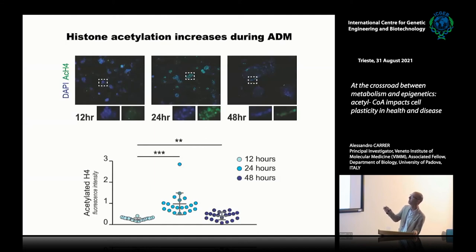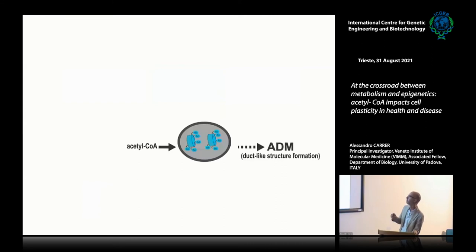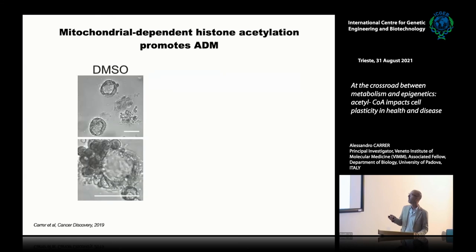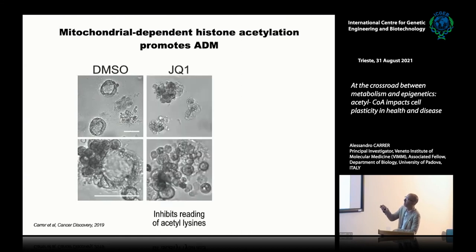To understand whether this elevation in histone acetylation was critical for the change in cellular identity, we treated cells with JQ1, a bromodomain inhibitor that blocks the reading of acetylated histone lysines. In DMSO-treated acinar cells after five days in collagen, the plate is now full of ductal-like structures. But when cells are treated with JQ1, they basically preserve their acinar morphology.